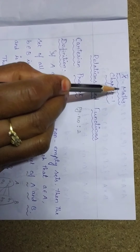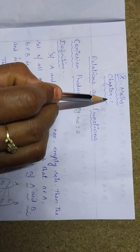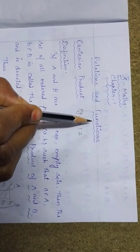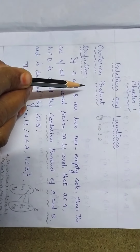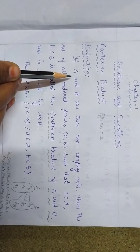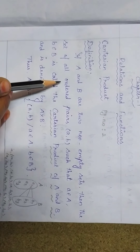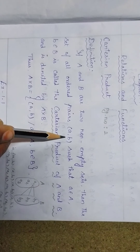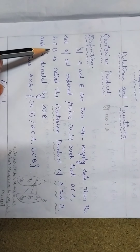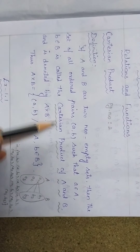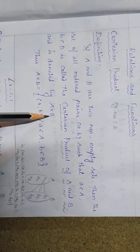Good morning students. Now we are going to discuss about 10th Maths Chapter 1, Relations and Functions — Cartesian product. If A and B are two non-empty sets, then the set of all ordered pairs (a, b) such that a belongs to A and b belongs to B is called the Cartesian product of A and B, denoted by A cross B.